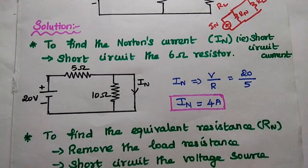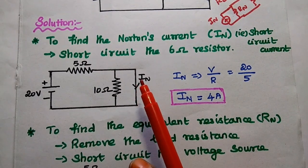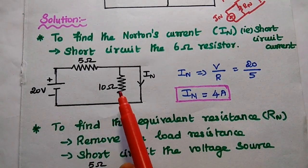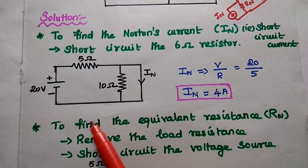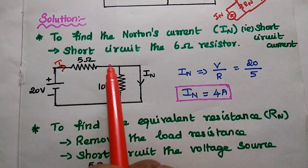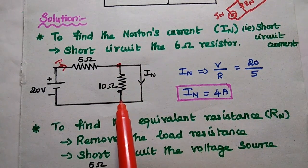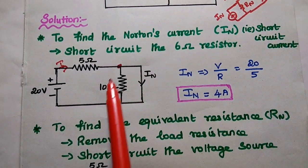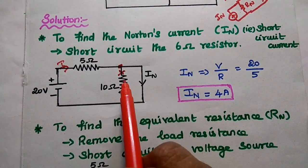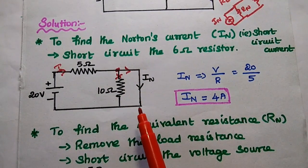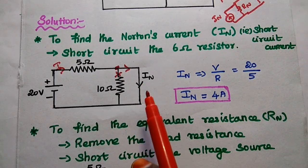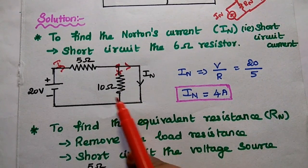In this first step, we remove the 6 Ohm and short circuit that branch. The circuit can be drawn with 20 Ohm, 5 Ohm, and 10 Ohm with a short circuited branch. Current I flows through the 20 Ohm and 5 Ohm path. At the junction, there is a 10 Ohm branch and the short circuited branch. Since current prefers the low resistance path, all current flows through the short circuit and no current flows through the 10 Ohm.